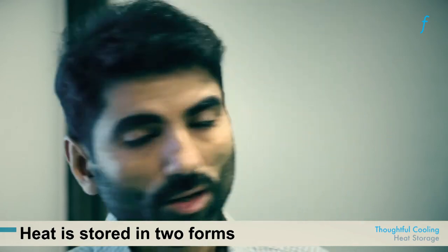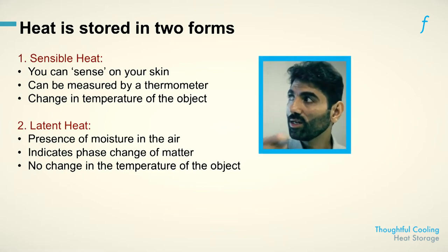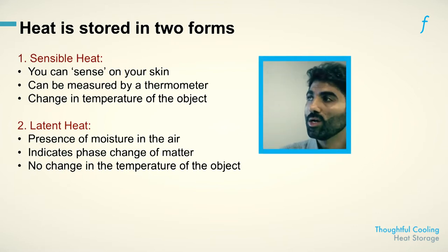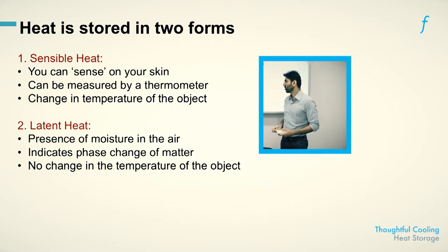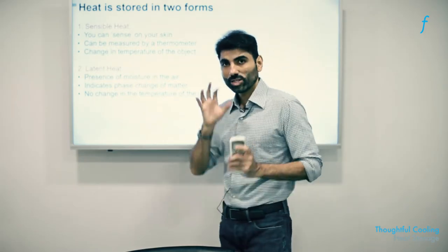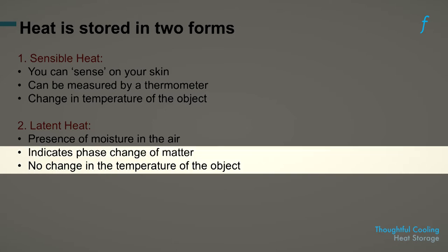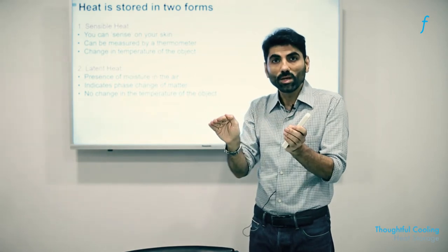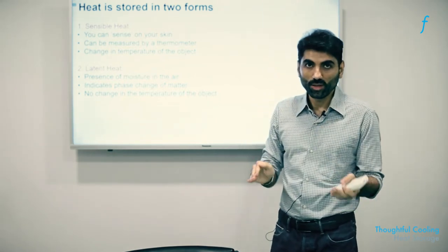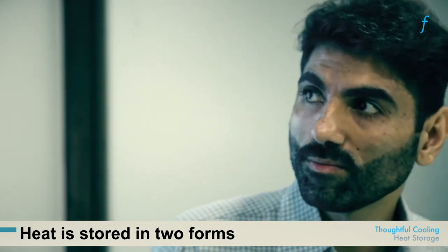Sensible heat can be sensed and measured with a thermometer. Latent heat, in contrast, cannot be directly sensed with a thermometer. Latent heat addition or subtraction from a body does not change the temperature of the object — it only changes the phase. So I can have ice at zero degrees and water at zero degrees; both have the same temperature but vastly differing amounts of latent heat stored in their molecules.